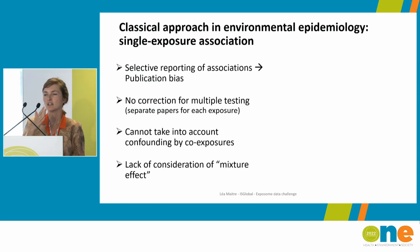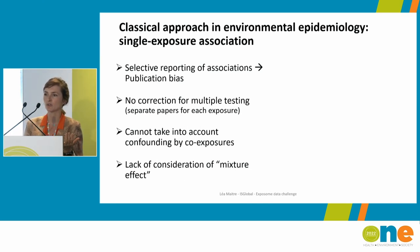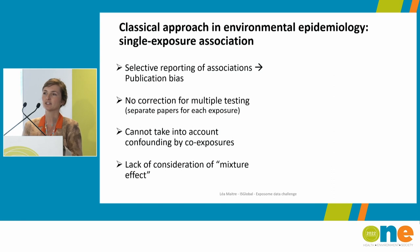Also, when you're measuring one exposure at a time, you're not correcting for multiple testing, so you have more chance findings. We also know it's important to take into account confounding by co-exposure. People who might be exposed to air pollution might also be exposed to traffic noise, a poorer urban environment, and also be more exposed to lead in the pipes. There are co-exposures that we know occur together in the same individuals, and it's very hard to say that one exposure is causing a health outcome if you haven't corrected for all these other co-exposures.